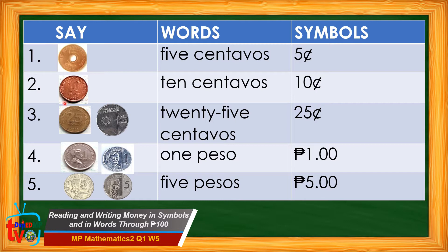For number three, we have the old twenty-five centavo coin and the new twenty-five centavo coin. We say twenty-five centavos. If we write it in words, we write the words twenty-five then centavos. And if we write it in symbols, we write the amount first which is twenty-five followed by a centavo sign. We read this as twenty-five centavos.